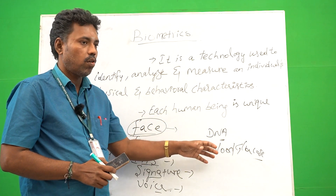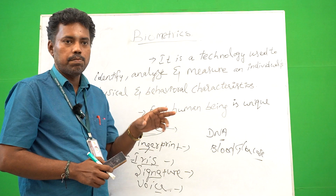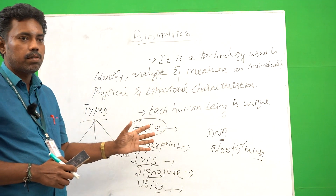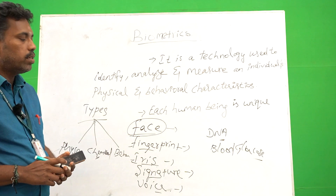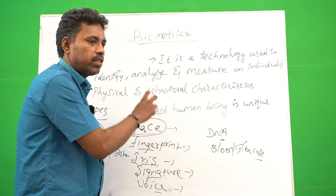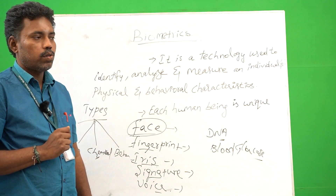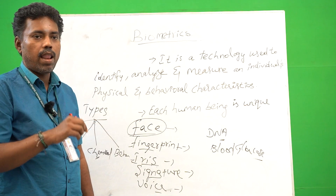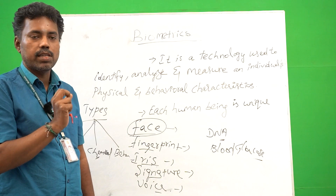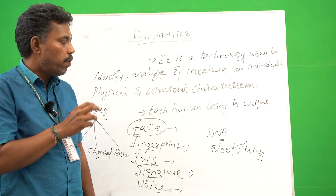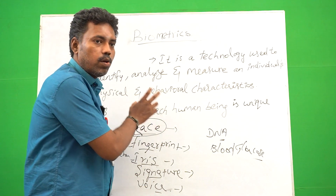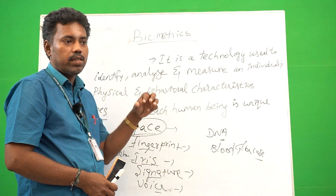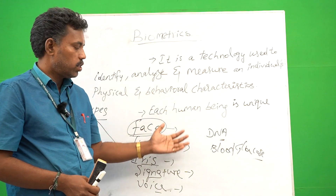Once checked, if it is wrong, it will mention wrong. If identified correctly, the right symbol is displayed and the person is identified. Each identification is based upon a mathematical formula. Each scan makes lines, and those lines are extracted from the image. Every human face is different, so we can easily identify each face.